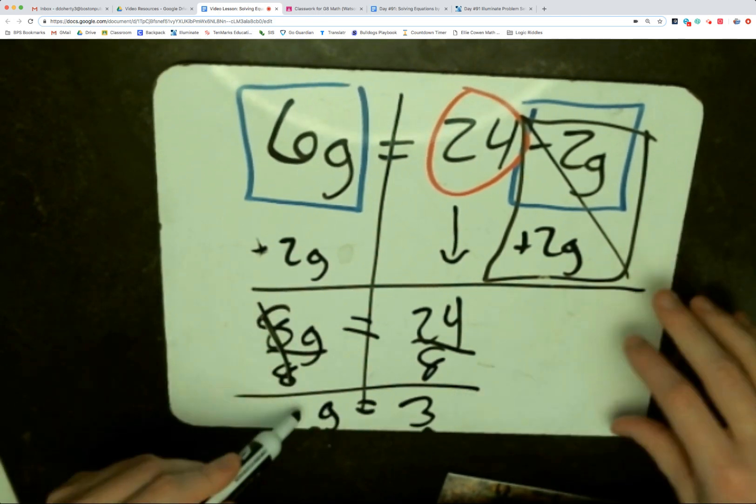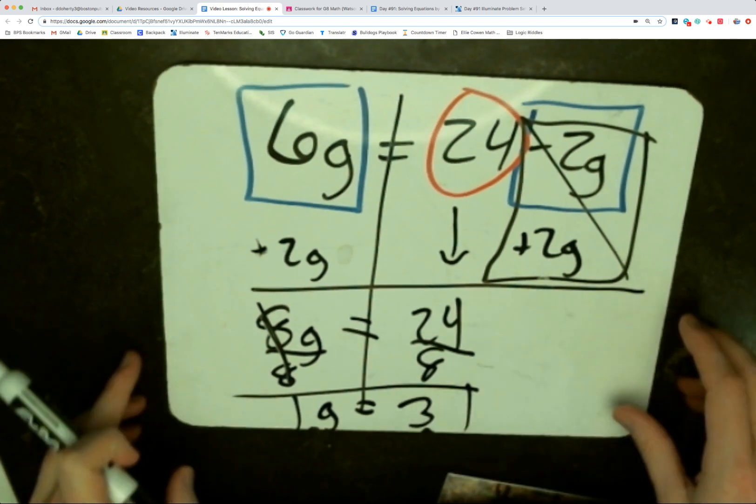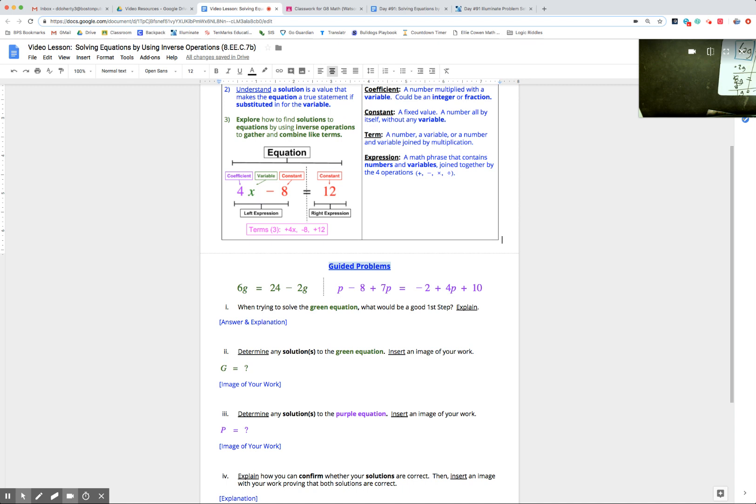We're not done yet. We still need to check that answer. We're going to come back to that later, but I'm going to put this whiteboard aside. Take a look back at the document. That's how we found the solution to the green equation. Hopefully you tried to do that on your own before watching me.